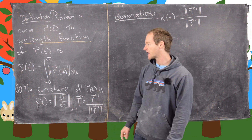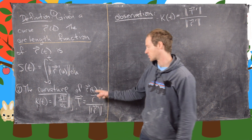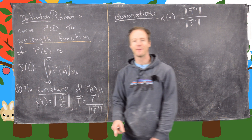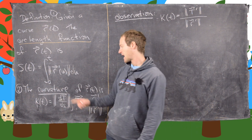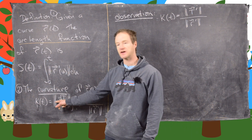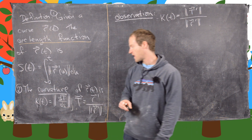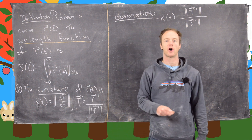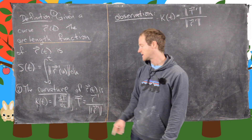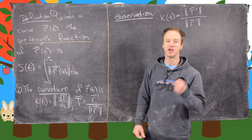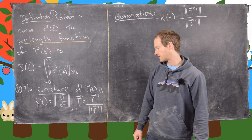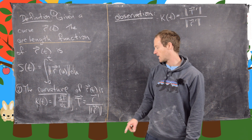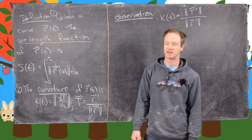Next, we want to define the curvature of r of t. We'll call it kappa of t, and that's the magnitude of this vector — the derivative of capital T with respect to s, with respect to the arc length. As a reminder, capital T is the unit tangent vector; in other words, we take the tangent vector r prime and divide it by its magnitude.